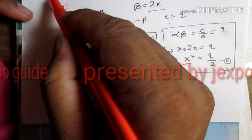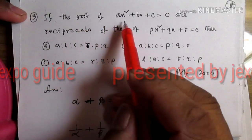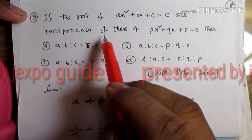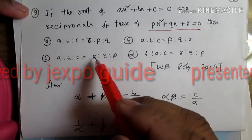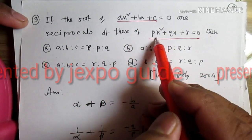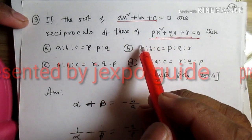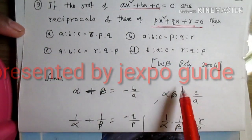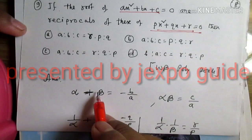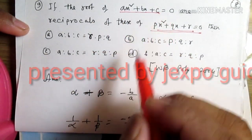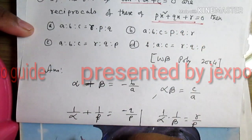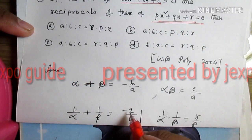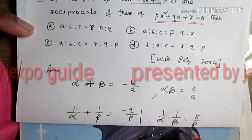Question number 9: if the roots of x squared plus bx plus c equal to 0 are reciprocals of the roots of x squared plus qx plus r equal to 0, find the relation. If the roots of the first equation are alpha and beta, then the roots of the second are 1 by alpha and 1 by beta. For the first equation: alpha plus beta equals minus b by a, and alpha times beta equals c by a. For the second equation: 1 by alpha plus 1 by beta equals minus q by p, and 1 by alpha times 1 by beta equals r by p.